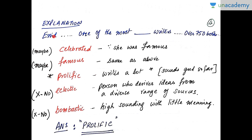Let us analyse the choices. 'Celebrated' means someone who is famous — she was famous, so it seems like a good choice; I'll mark it as maybe. 'Famous' also fits since it's a synonym of celebrated, so that's a maybe too. Now 'prolific' means someone who writes a lot. 'One of the most prolific writers who has written over 750 books' — this fits very well. So for me right now, prolific is a yes because it seems to be a very good answer.